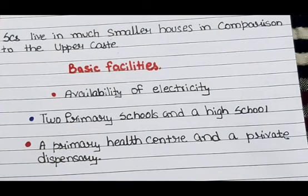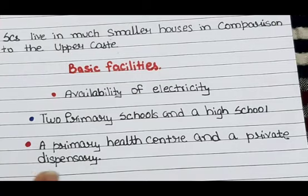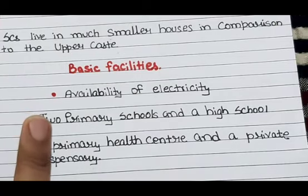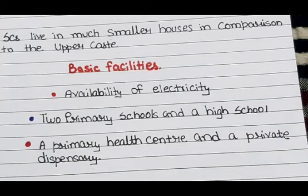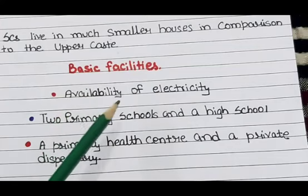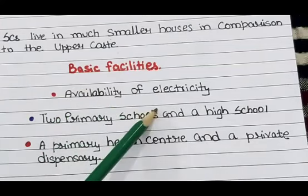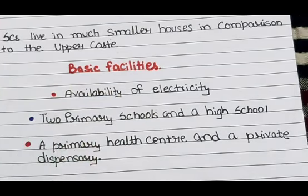So this was an introduction to your chapter. I have explained what Palampur is — a hypothetical village — and you've read about the population division among various castes. You've also seen the basic facilities: electricity, schools, and health centers, and how Palampur is well connected to nearby Raiganj and Shahpur. We will further discuss this chapter in the next video. Thank you.